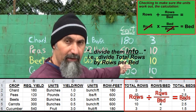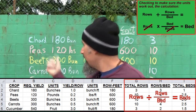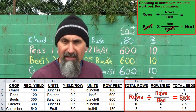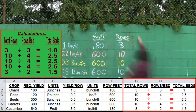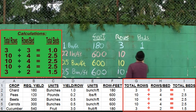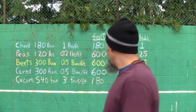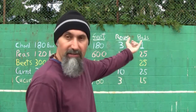To figure out how many beds each item is going to use, we take those specs and divide them by the total number of rows, and that gives us how many beds of each item we're going to be planting. That essentially becomes our section. The total number of beds we need per crop breaks down as: one bed of chard, 2.5 beds of peas, 2.5 beds of beets, 2.5 beds of carrots, and 1.5 beds of cucumber.